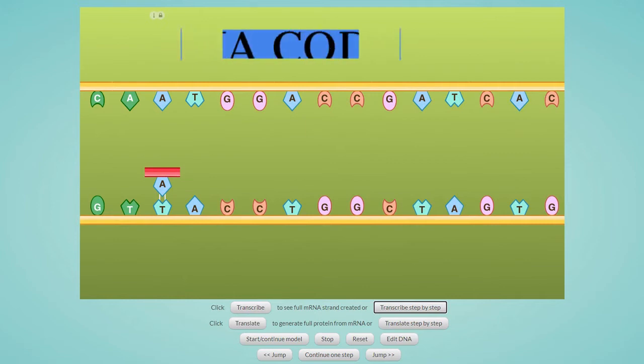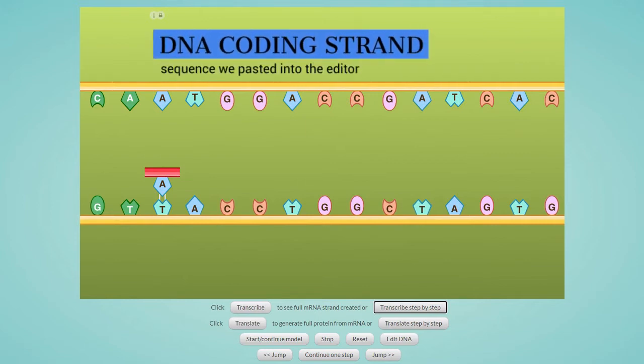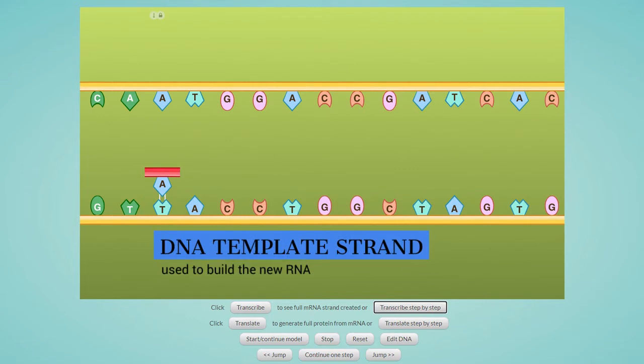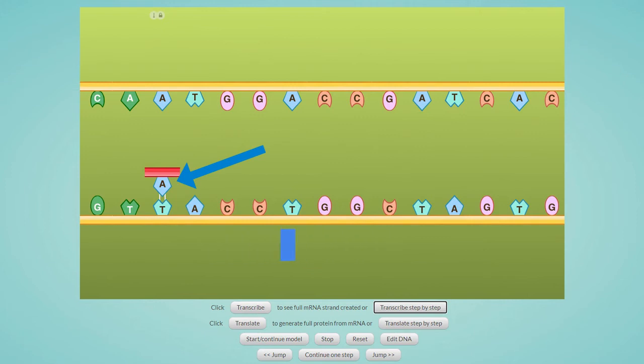You can see the top strand of the unzipped DNA is the sequence we pasted into the editor. This strand is called the coding strand. The lower strand is the one which will be used to build the RNA. This strand is called the template strand. A blue adenine nucleotide has paired with the first base of the template strand, which is a T for thymine.